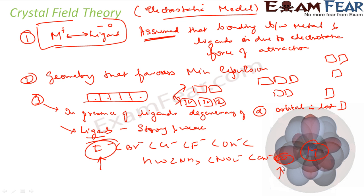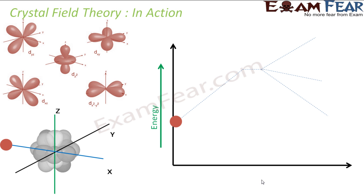Let's take an example — crystal field theory in action. In an isolated metal atom, all five d orbitals of a given principal state, for example the 3d orbitals, are at the same energy level — they are called degenerate orbitals in the absence of any electric or magnetic field. As you go from left to right in the diagram, you are adding ligands.